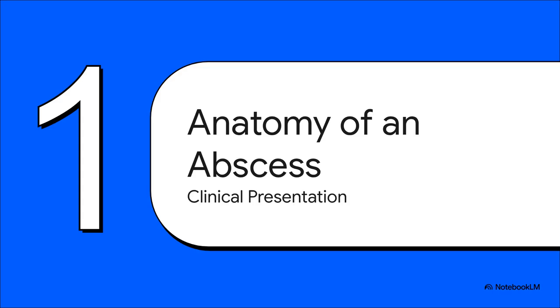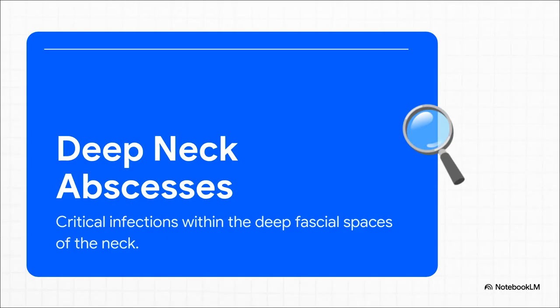First, we have to understand the disease itself. What are we really looking at when we talk about these deep neck abscesses? At their very core, these are collections of pus trapped deep inside the neck within complex fascial planes. This is not a simple skin infection. We're talking about abscesses literally right next to the most critical structures in your body — your airway, major blood vessels, vital nerves. That anatomical real estate is exactly what makes them so incredibly dangerous.